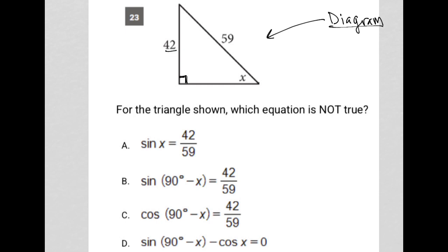We know this side is 42, this side is 59, which means I could find this side using Pythagorean theorem, which says A squared plus B squared equals C squared. I see X labeled here for my angle, which means I could use SOHCAHTOA if needed to figure out what X is.